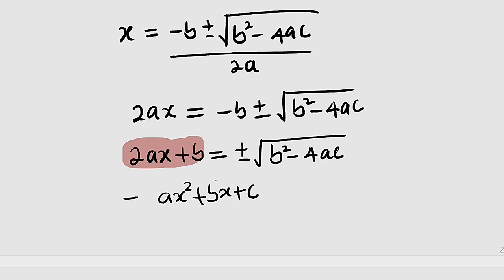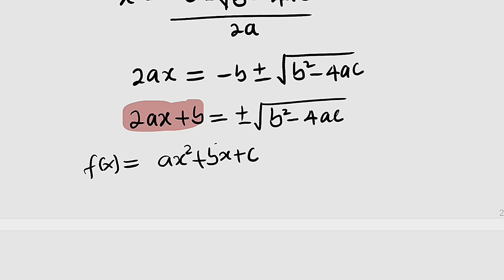If you differentiate this function, you have f'(x) or dy/dx equal to 2ax to the power of 1 plus b. The derivative of bx is b, and the derivative of a constant is zero.